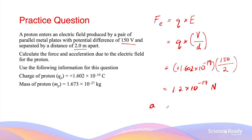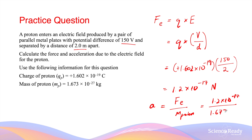The acceleration due to this force that the proton experiences can be given by Newton's second law. We take the electric force and divide by the mass of the proton: 1.2 × 10⁻¹⁷ newtons divided by the mass of the proton, which is 1.673 × 10⁻²⁷ kilograms. This gives quite a large acceleration of 7.2 × 10⁹ meters per second squared.